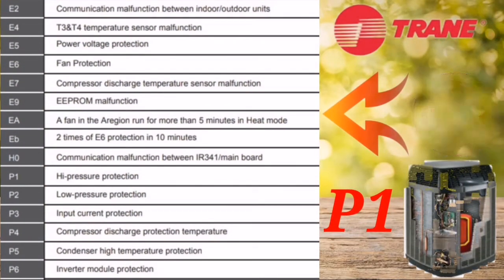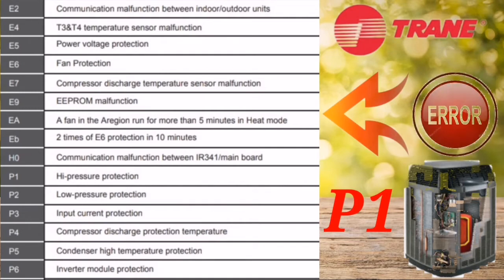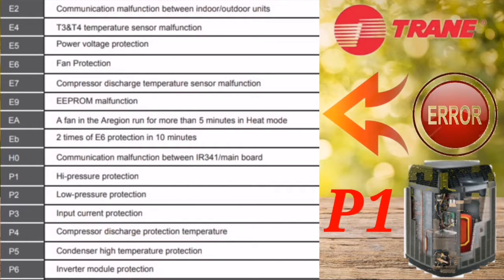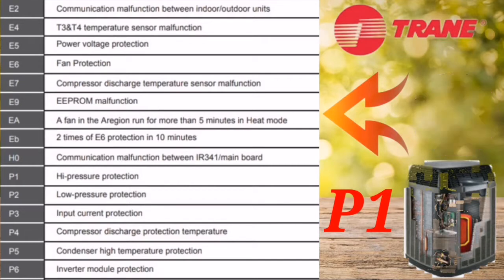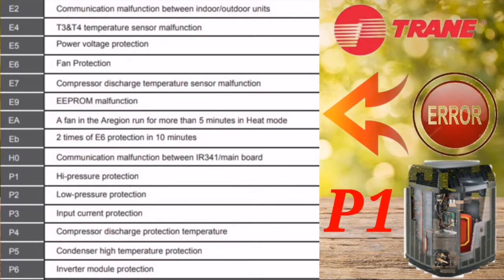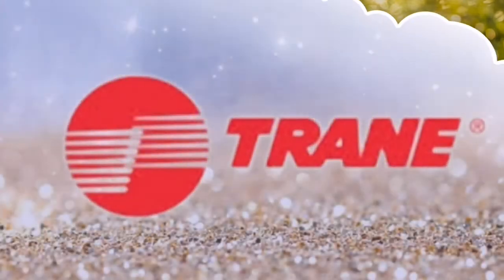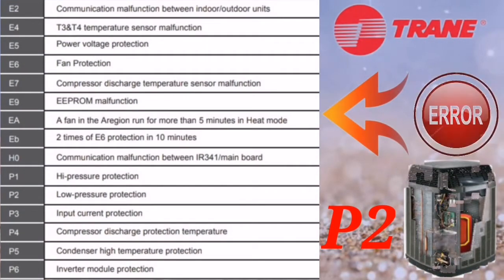The next error code is P1, which means high pressure protection. This can occur when the refrigerant quantity is too high, causing the system to protect the compressor. First, check the high pressure switch — verify it is connected properly and undamaged. Then check the resistance of the high pressure switch. Also verify the outdoor PCB is sensing the high pressure switch correctly. If the PCB is not sensing it properly, change the outdoor PCB.